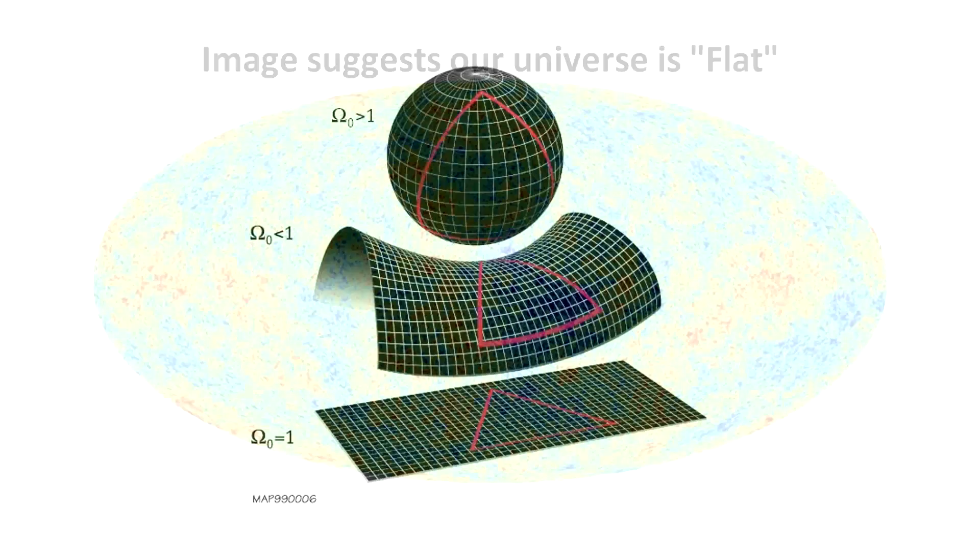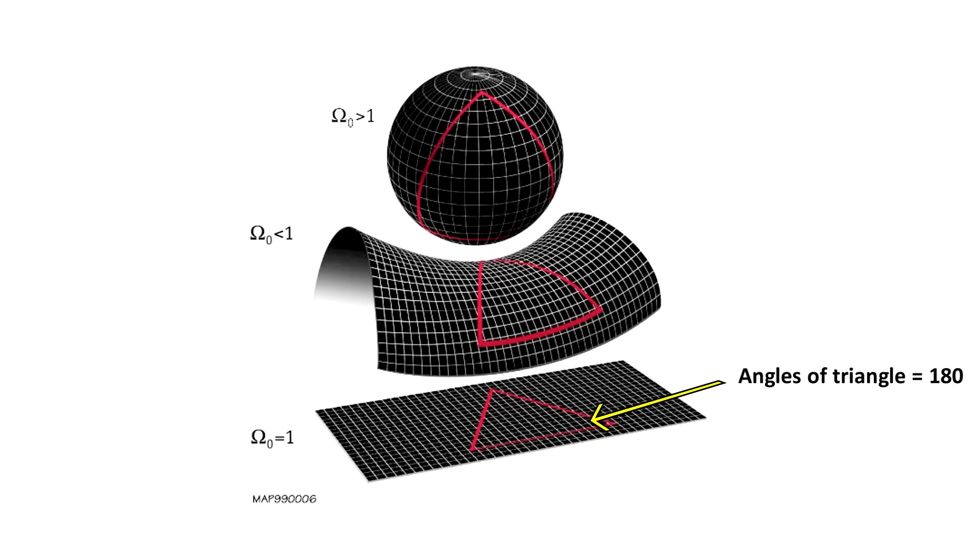If space was not flat, but positively curved, like a four-dimensional sphere, then we would expect to see multiple images of the same object in the sky, because distant light rays would converge.